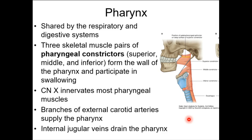What cranial nerve innervates the pharyngeal muscles? The vagus nerve — cranial nerve number 10. The pharyngeal constrictors — superior, middle, and inferior — participate in swallowing, and swallowing is a reflex. Therefore it has autonomic innervation, specifically cranial nerve 10, the vagus.